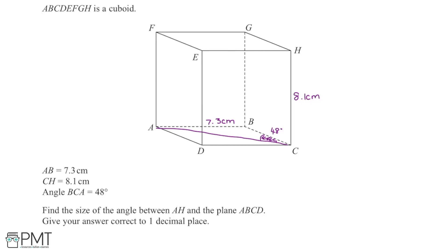I'm then asked to find the size of the angle between AH and the plane ABCD, so this rectangular face at the bottom, and I'm asked to give my answer correct to one decimal place. So I'm also just going to draw in the angle that I'm trying to find, just so that I can see how I might plan a strategy to go about finding it. So if I draw in the line AH, the angle that I want to find is between the line AH and this line here AC, which is basically the plane here. So I need to find this angle and give it to one decimal place.